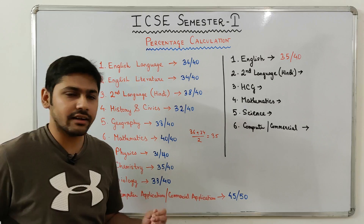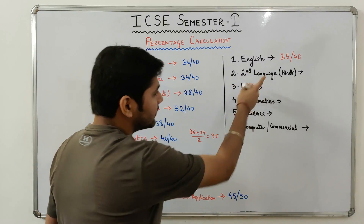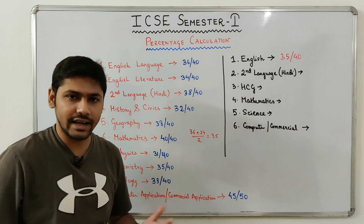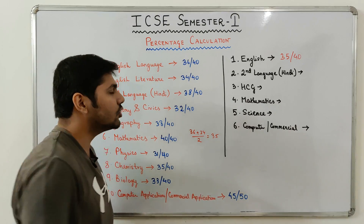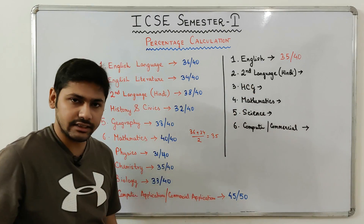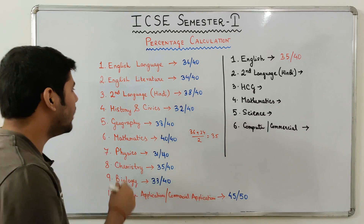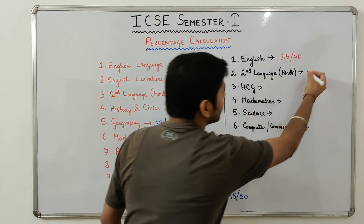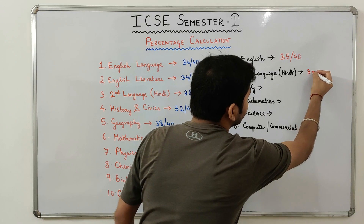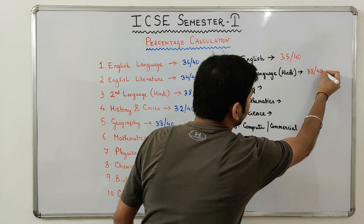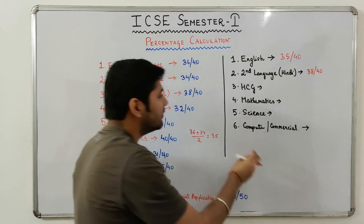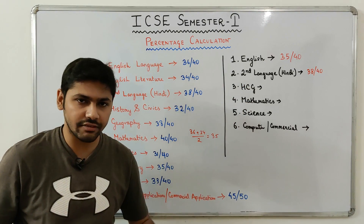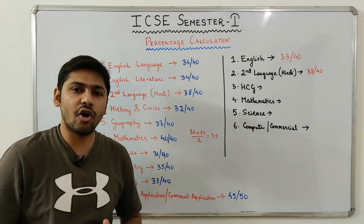Coming to the second subject — Second Language, meaning Hindi, Bengali, Assamese, or any other second language. Second Language is a single subject, so the score remains as you have scored: 38 out of 40.